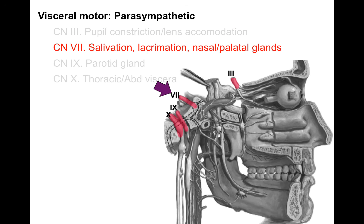Cranial nerve number 7 handles salivation — part of the rest-and-digest process of the parasympathetic nervous system is the production of saliva to mix with food. So cranial nerve 7 controls salivation of the submandibular and sublingual salivary glands, lacrimation for the lacrimal glands, and the nasal palatal glands that produce mucus lining the nasal cavity, palate, and sinuses.